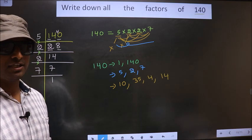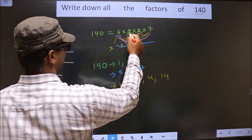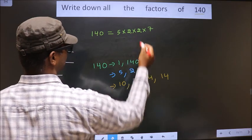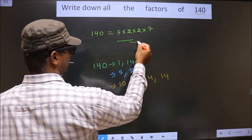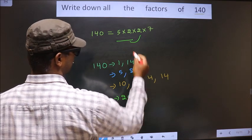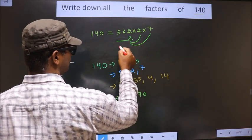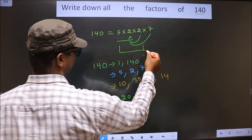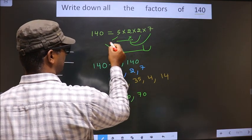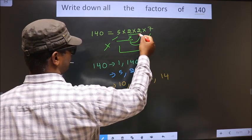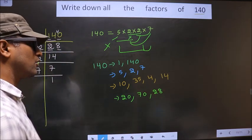Next, you take a combination of 3 numbers. How do we take? First, I fix these 2 numbers. That is 5 into 2, 10. I combine with 2, we get 20. Now, I combine with the 7, we get 70. Now, I leave these 2. I take 5 and 2, 10. Combine with the 7, we get 70, which is already there. That means, you leave 5. Take these 2 numbers. 2 into 2, 4. Combine it with the 7, we get 28. No more possible combinations.